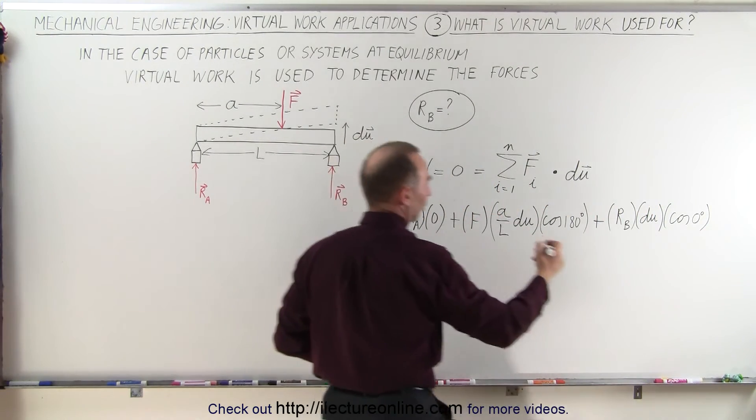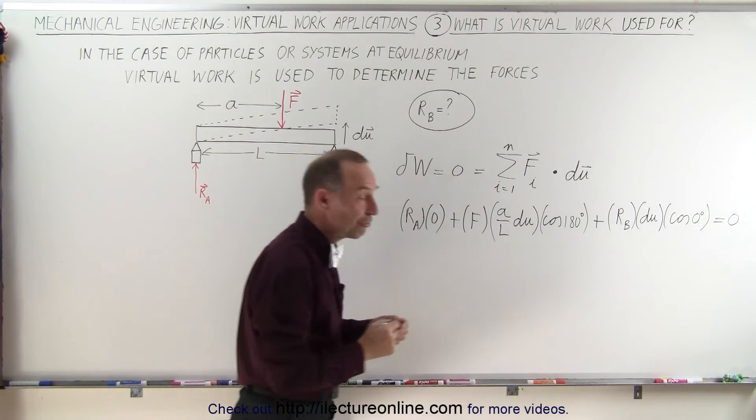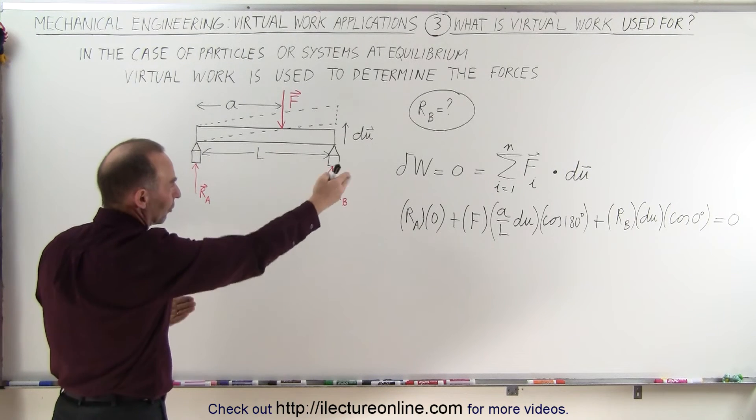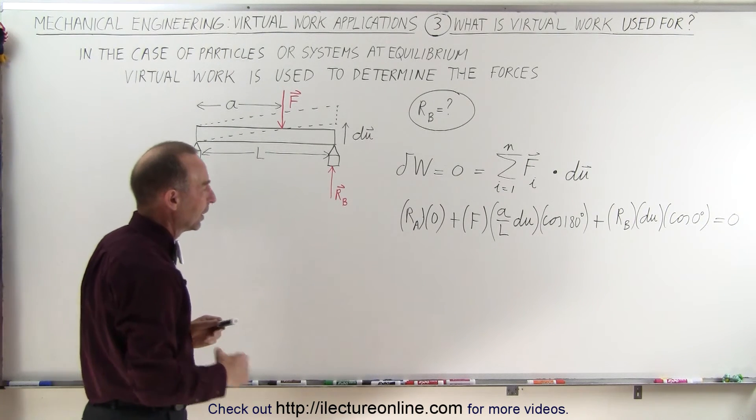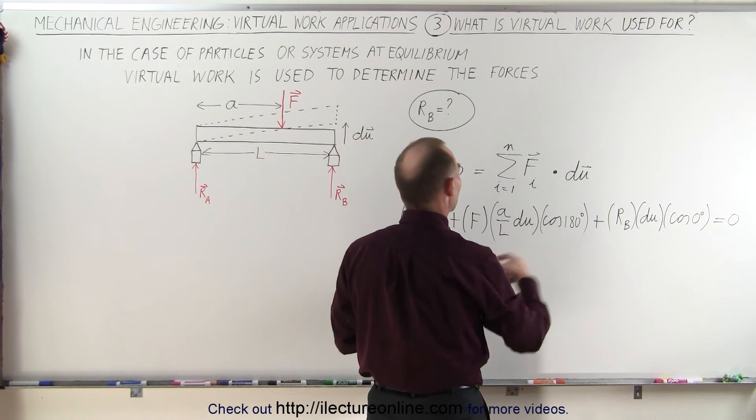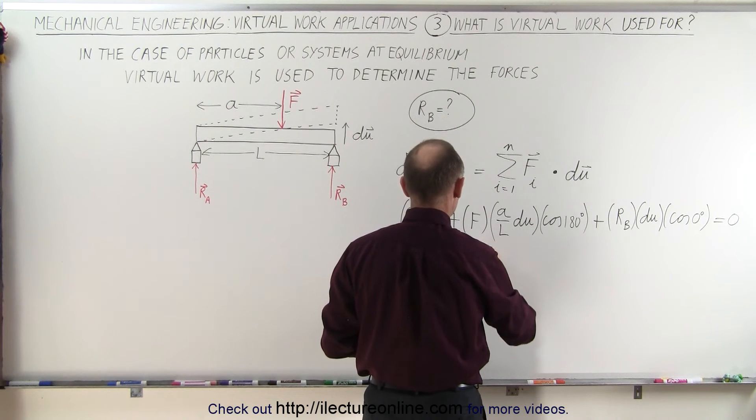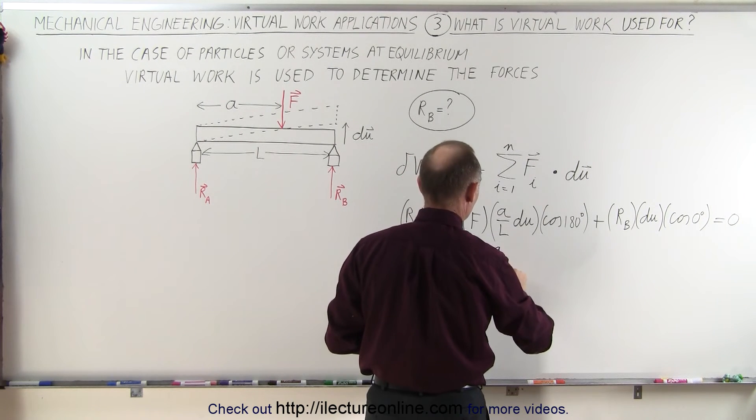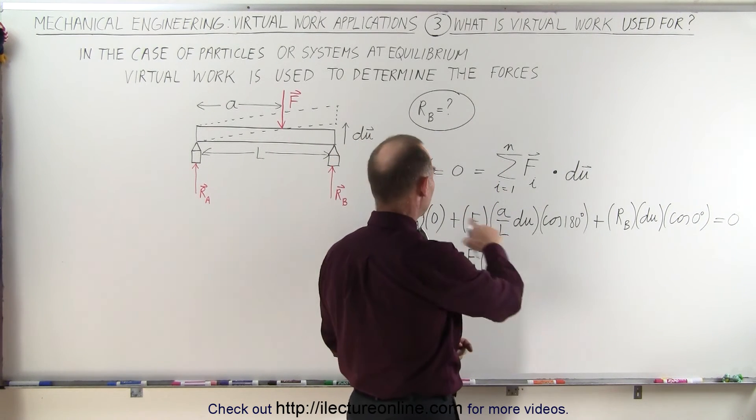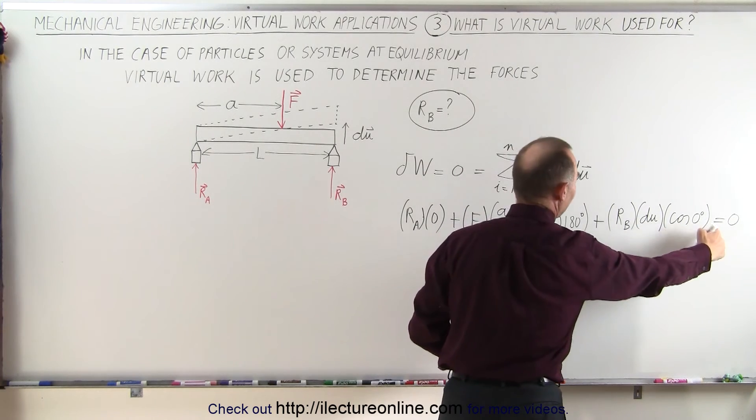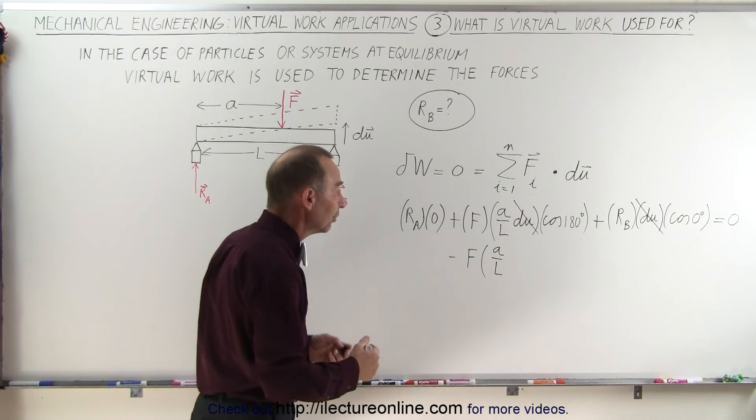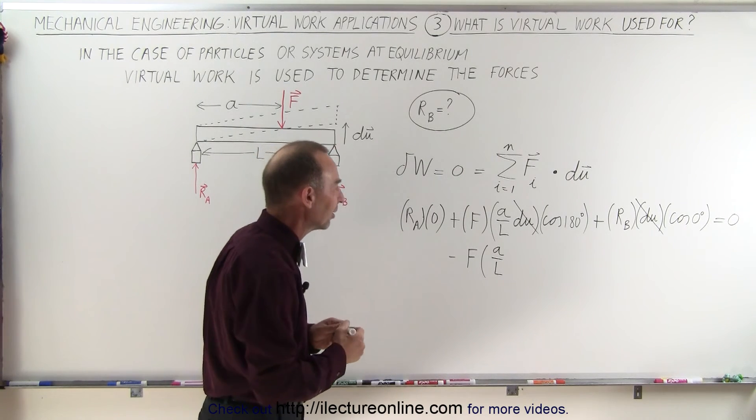Now, this part is zero. And of course, all that adds up to zero because the virtual work done on a particle or a system that is at equilibrium will always be equal to zero. So this term is zero. Then here, the cosine of 180 is minus one. So this becomes minus F times A over L. And let's see here, what else can we do? Well, we have a du in each term. So since that's equal to zero, the du's cancel. So it doesn't really matter how much we move or we make the vertical movement. We can cancel out the du.